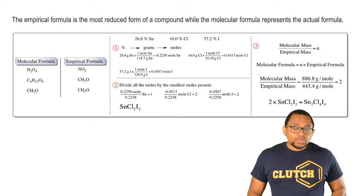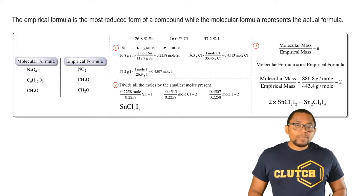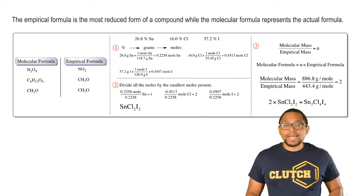The empirical formula represents the most reduced form for a compound, whereas the molecular formula represents the actual formula for that compound.